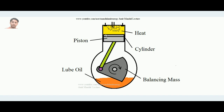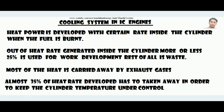When heat is generated inside the cylinder, only a portion converts into work. In a heat engine, suppose 100 joules of heat is developed in the cylinder — practically only about 25 joules will convert into work over the piston, because when the piston works, the crankshaft rotates. So only 25 joules converts into work; the rest — about 75 joules — is waste.